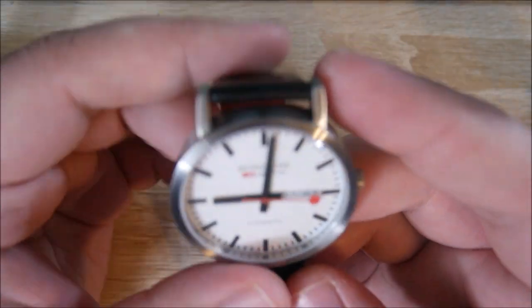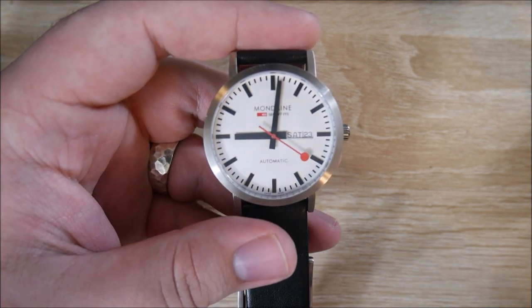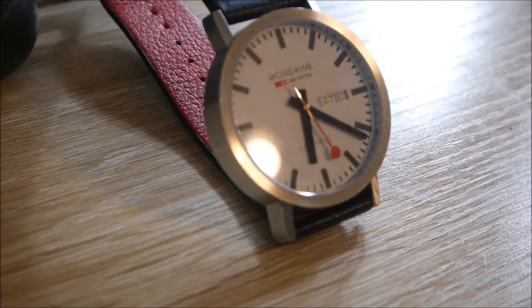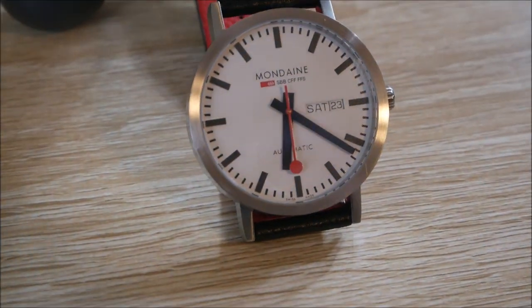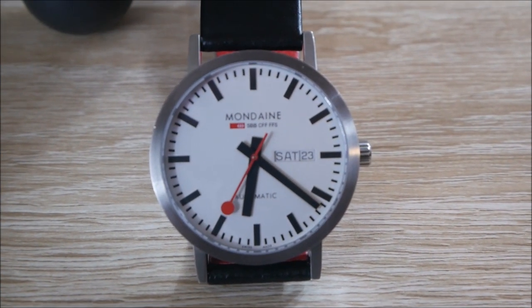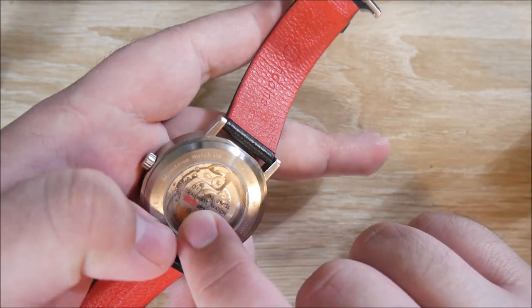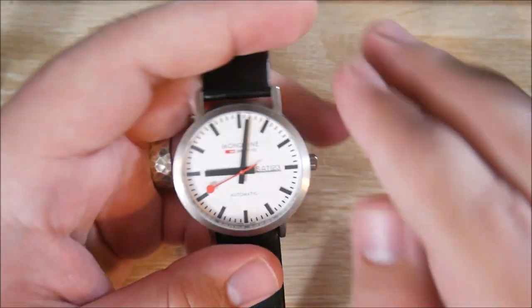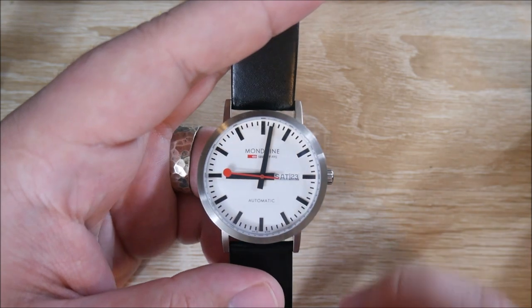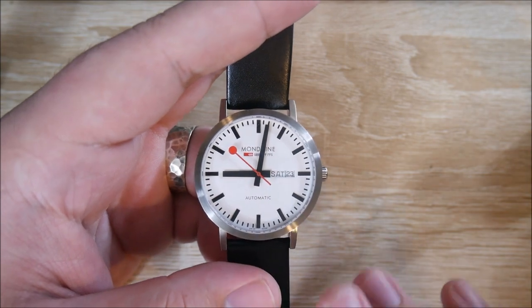So on to what I like about this watch. The thing that really drew me to this and made me ultimately decide to buy it is the design overall. It's a very minimalist, dressy style with a little bit of flair due to the red accents on the seconds hand, under Mondaine, on the crown, the back side of the strap, and under Mondaine on the case back. Mostly black and white, very simplistic design, very legible.